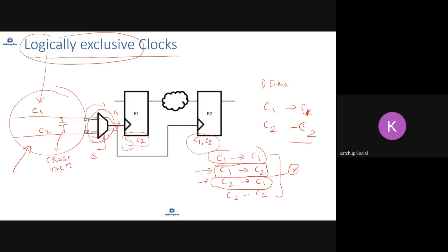A student asks whether set_case_analysis can be used here. Yes, you can do set_case_analysis of zero or one, but then you will have to do two STA runs — one with S equal to zero and one with S equal to one — otherwise your timing analysis will not be complete. You can set a constant, but you need to make sure you do analysis with both cases, so one constraint will have S equal to zero and another will have S equal to one.